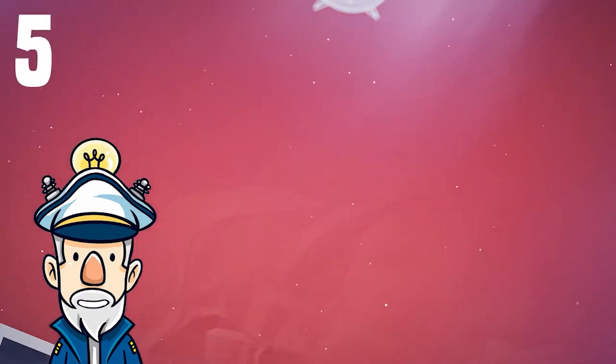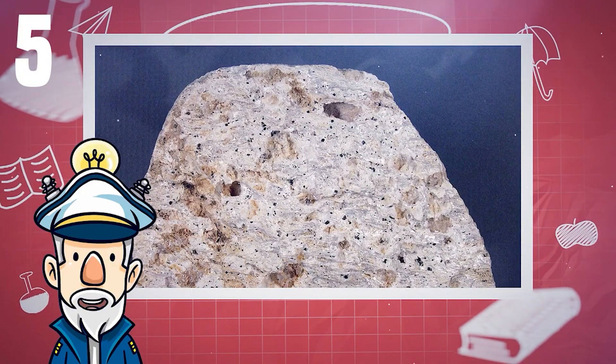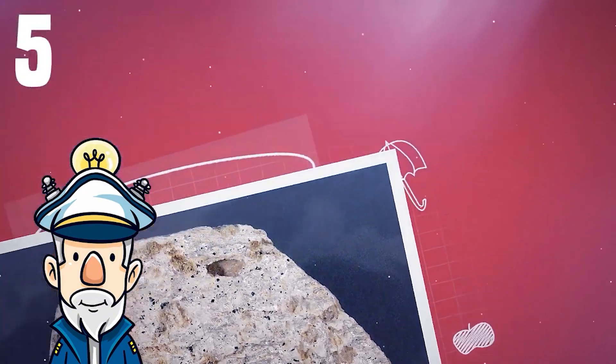Number 5: Pumice is a unique volcanic rock called igneous that can float in water. It can also be used as an abrasive and is sometimes used in beauty salons for removing dry skin.